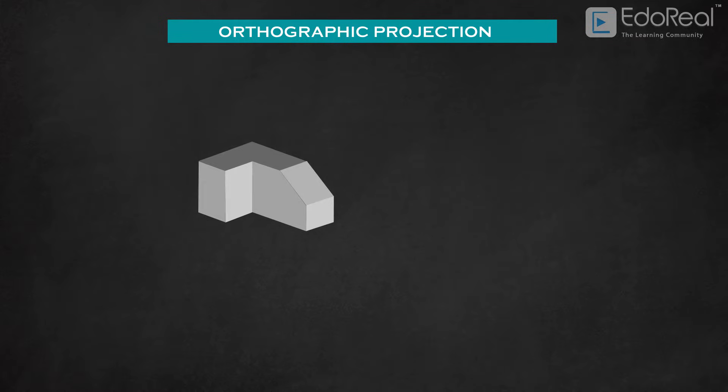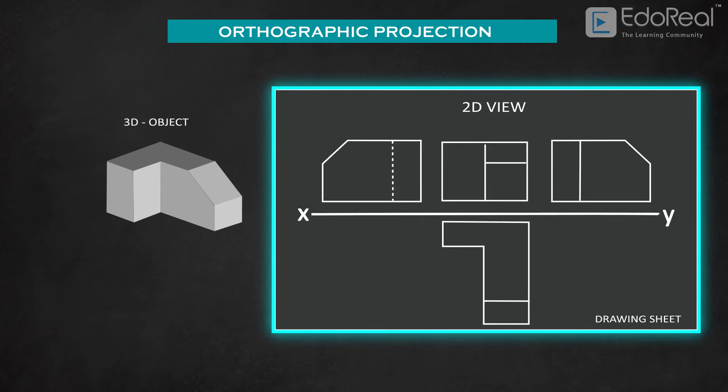Orthographic projection means the representation of three-dimensional objects into two-dimensional views on the drawing sheet.